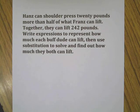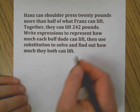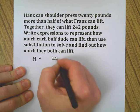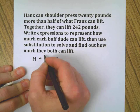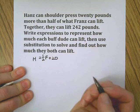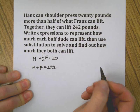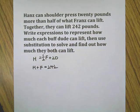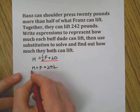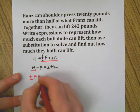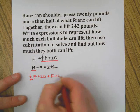Okay. Oh, the bell's going to ring in three minutes. My class is coming in. I better get with it here. Hans can shoulder press 20 pounds more than half of what Franz can lift. Together, they can lift 242. Hopefully, you can see here that I'm going to take that and put it there. I'm going to substitute. That gives me half of Franz plus 20 plus Franz equals 242.